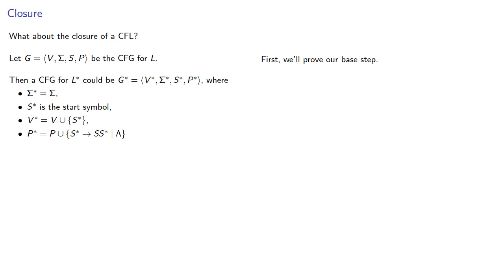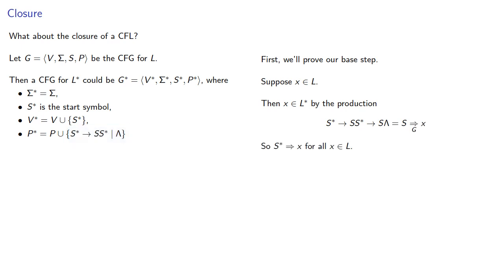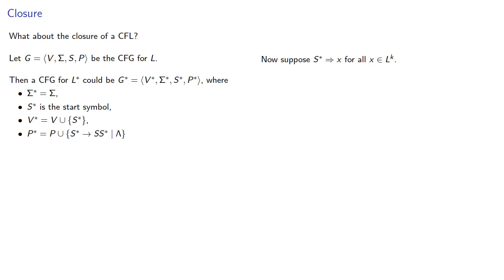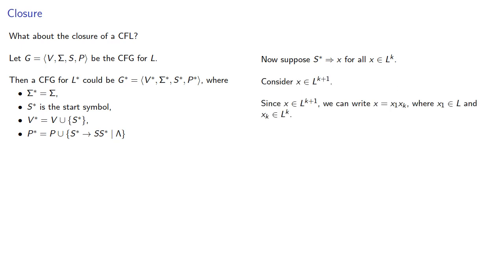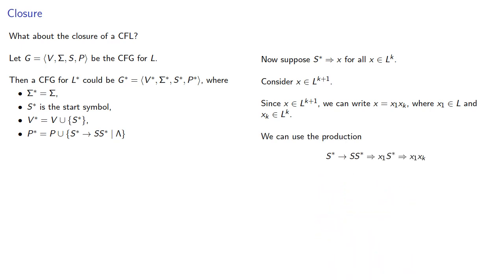For the base step: suppose x is in L, then x is in L* by the production, so S* produces x for all x in L. For the inductive step: suppose S* produces x for all x in Lᵏ. Consider some string x in Lᵏ⁺¹. Since x is in Lᵏ⁺¹, we can write it as x1·xk where x1 is in L and xk is in Lᵏ. We then apply the production rule, so S* produces x for all x in Lᵏ⁺¹, which completes the induction step.